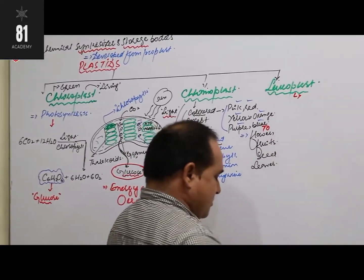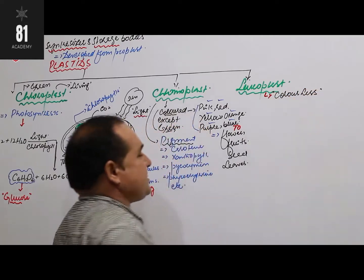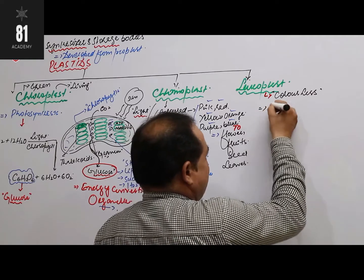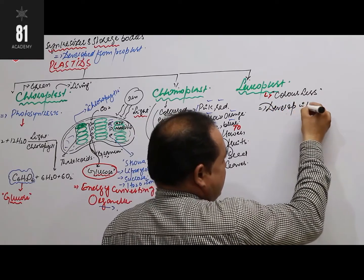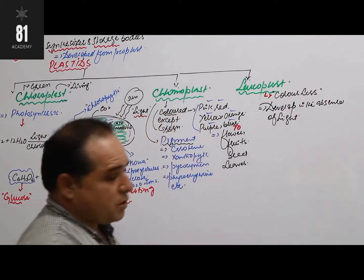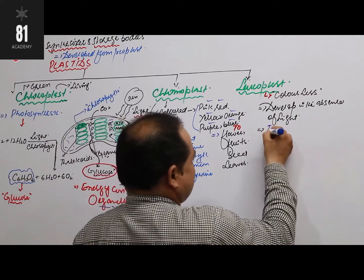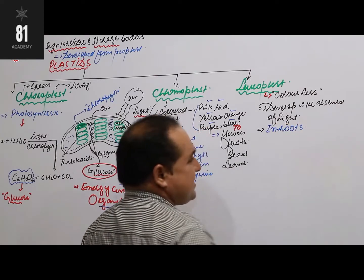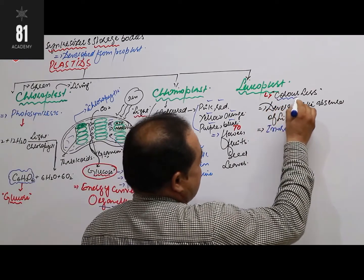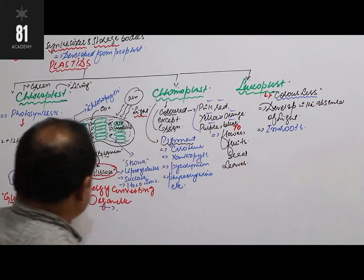Leucoplast — 'leuco' means colorless. These colorless plastids develop in the absence of light and are found in roots, because roots are the underground part of the plant. So leucoplast are colorless plastids found in roots, developing in the absence of sunlight. Their function is storage of proteins, carbohydrates, lipids, and other materials.